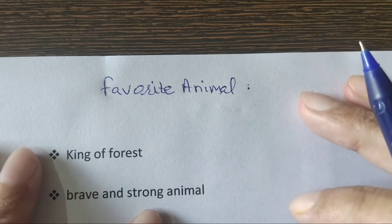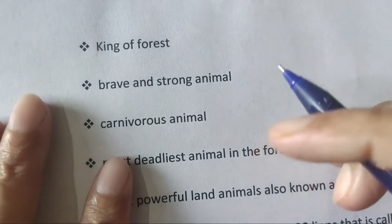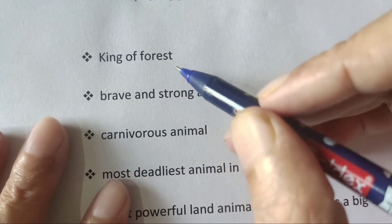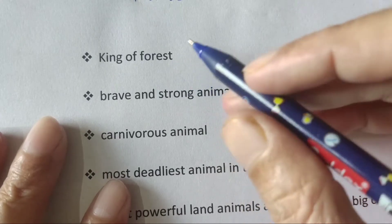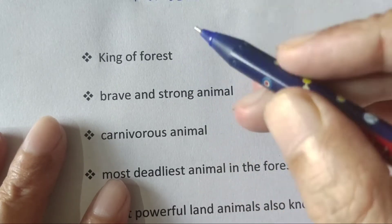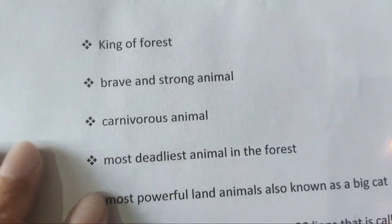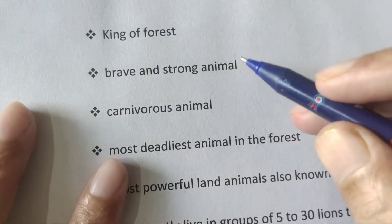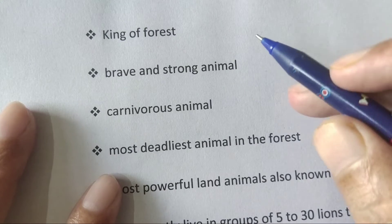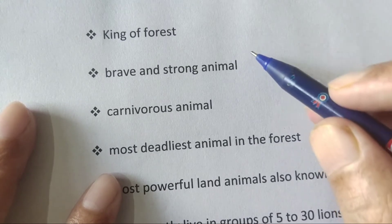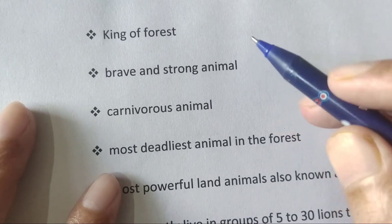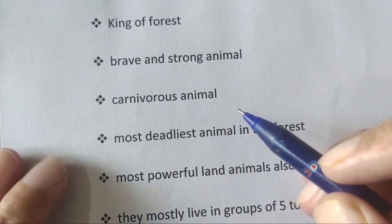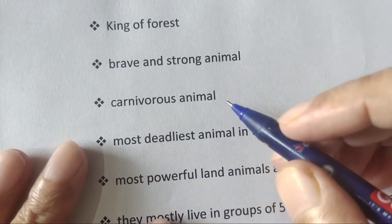You can talk about lion — for example, 'My favorite animal is lion.' You can give reasons like 'king of forest.' Lion is the king of the forest. The best thing about the lion is that it is the king of the jungle. Next, the vocabulary you can use: 'brave and strong animal.' Undoubtedly, lion is one of the bravest and strongest animals.